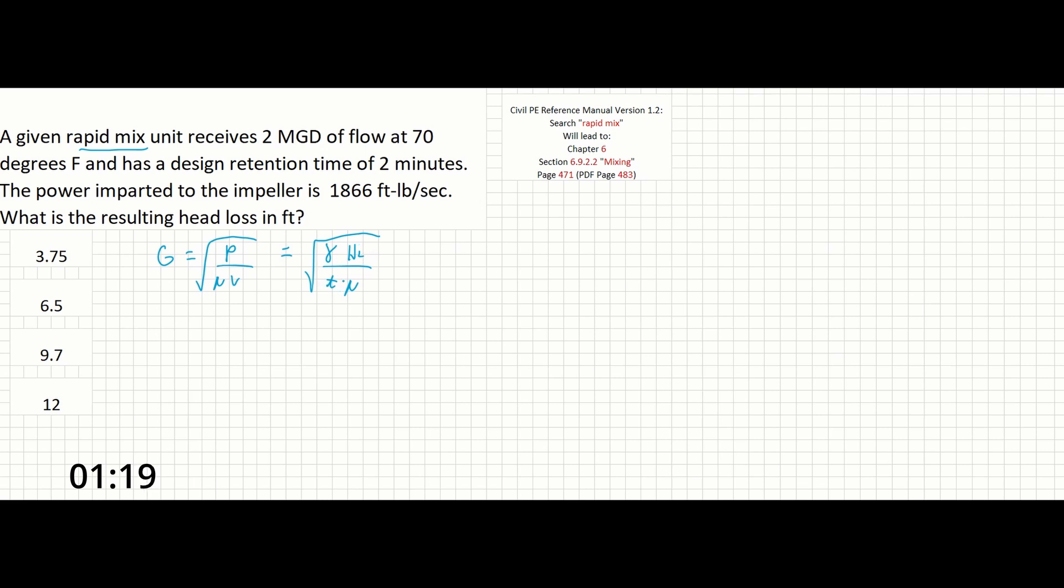The problem is asking us to find the head loss in terms of feet. The problem also gives us some of the other information that we're going to need to solve this problem. So let's write this out and begin to simplify. Step one, we can see that we aren't given any information about velocity gradient in the problem or term G here. So we can remove that and then simplify this equation even more. After we remove G, we can remove mu from both sides of the equation and we can also remove the square root. So the equation will simplify down to P over V equals gamma times head loss over time.